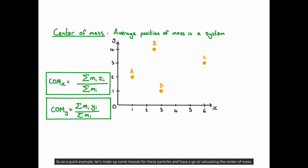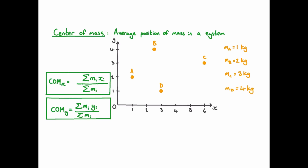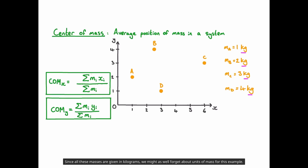So as a quick example, let's make up some masses for these particles and calculate their centre of mass. Let's say the mass of particle A is 1 kg, the mass of particle B is 2 kg, the mass of particle C is 3 kg, and the mass of particle D is 4 kg. It's worth noting that all of the masses need to be expressed in terms of the same units, but as long as the units of mass are the same, they won't actually affect the position of the centre of mass. Since all these masses are given in kilograms, we can simply use masses 1, 2, 3, and 4 respectively.